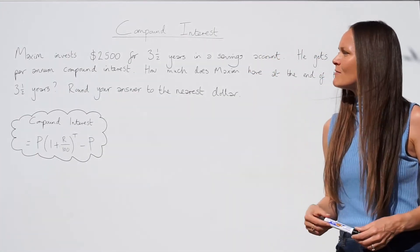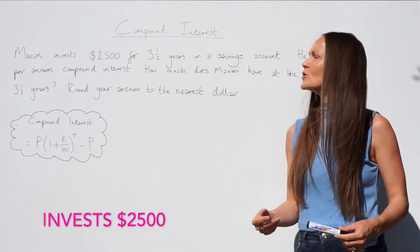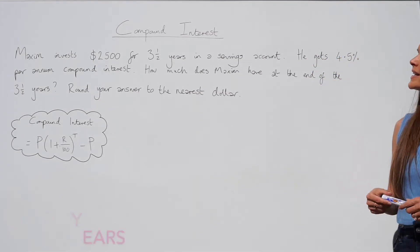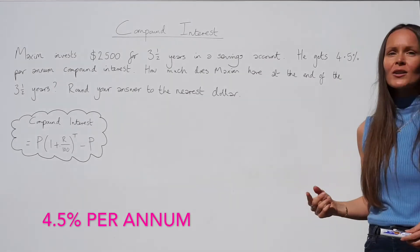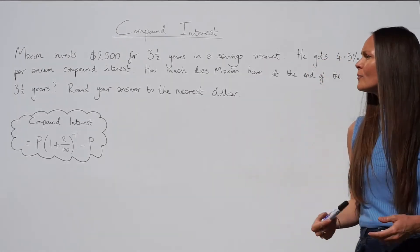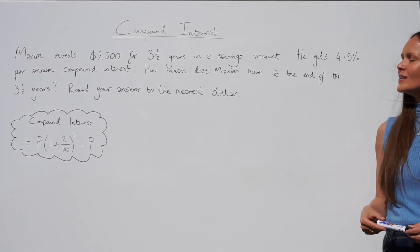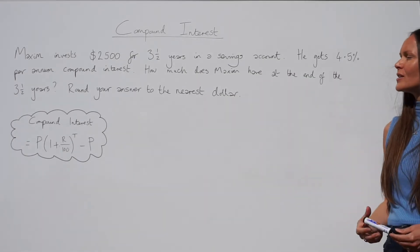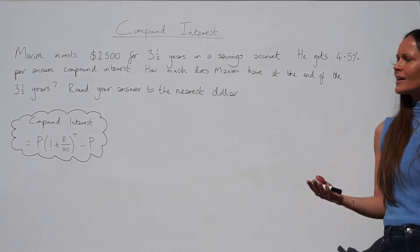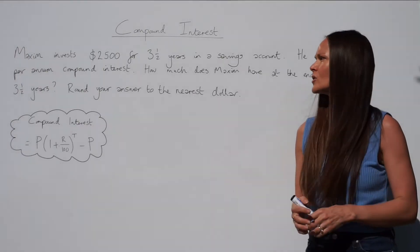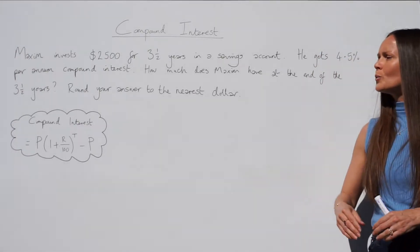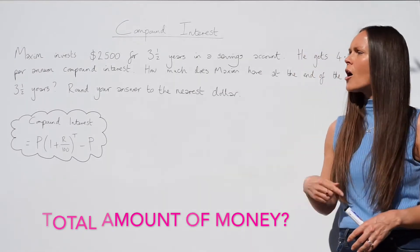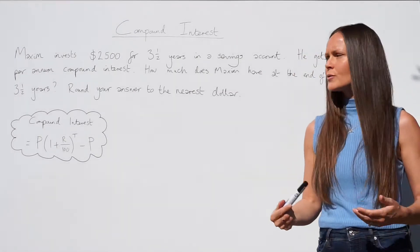In the next question, Maxime invests $2,500 for three and a half years in a savings account. He gets 4.5 percent per annum compound interest. How much does Maxime have at the end of the three and a half years? Round your answer to the nearest dollar. We're not working out the compound interest here — we need the total amount of money Maxime has after the investment.